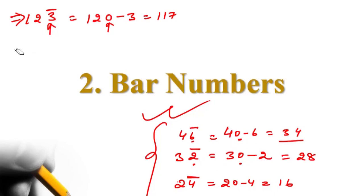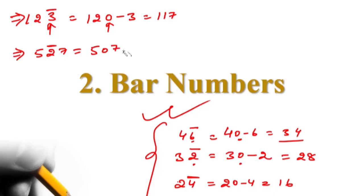The same number we are going to subtract. Now tell me the answer for this question: 5, 2, 7 — but the bar is on only 2, not on 7.